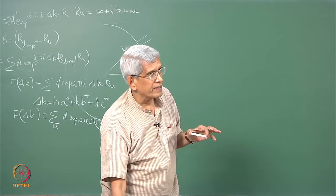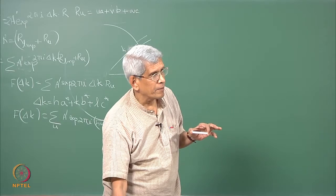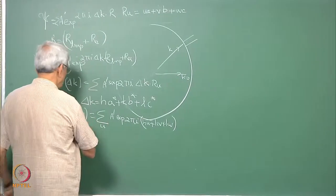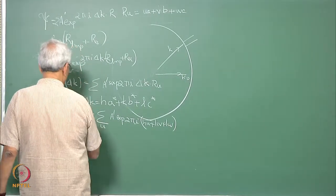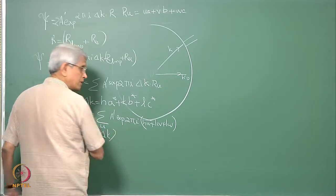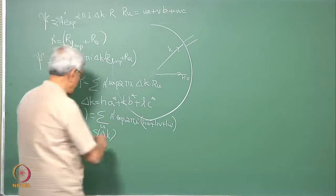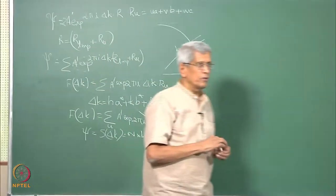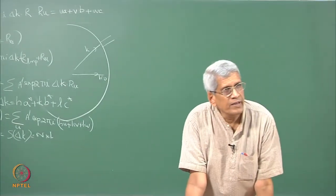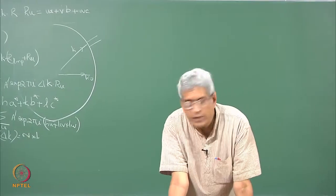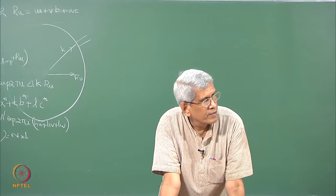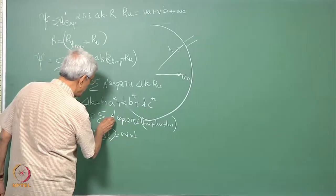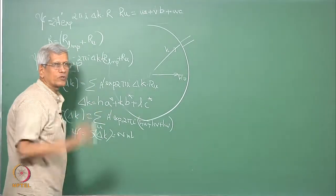If there are n lattice points in the sample and it is a primitive lattice, the total scattered amplitude S(Δk) equals n times 1 — that is n into the scattering amplitude. For the BCC lattice, we consider it as a simple cubic lattice with 2 atoms per lattice point. The positions are R_U1 = (0,0,0) and R_U2 = (½,½,½) with respect to the unit cell.